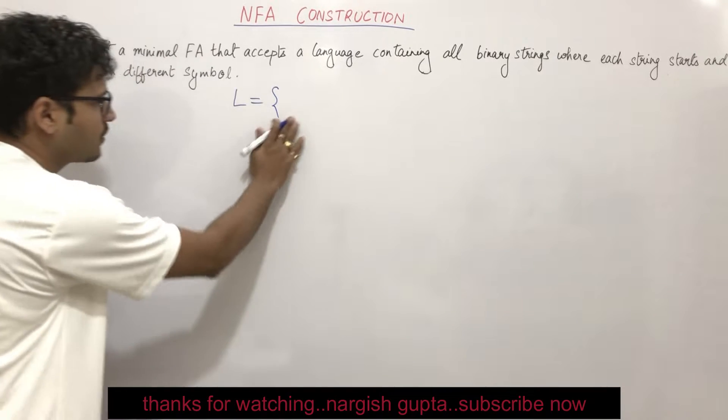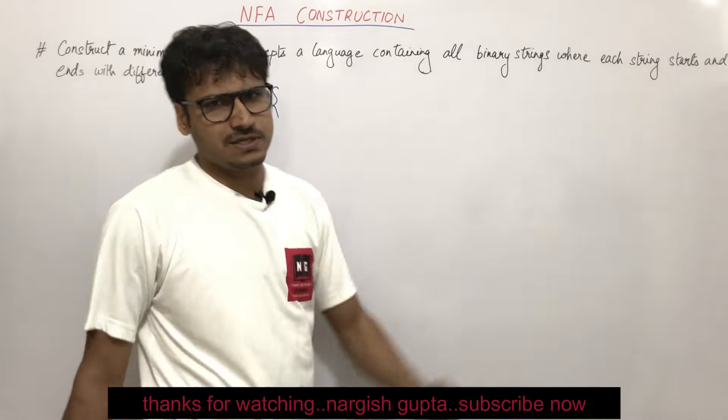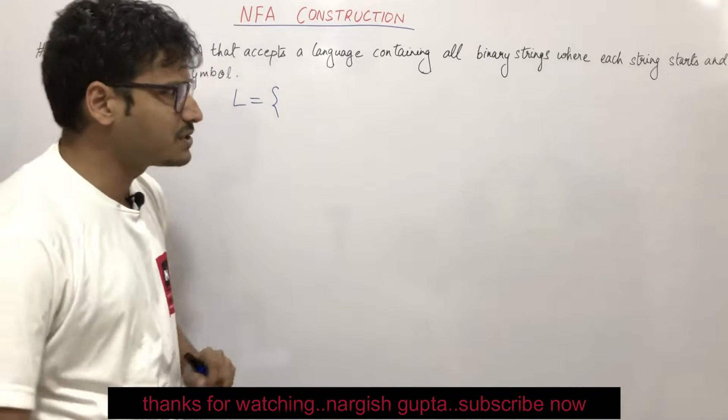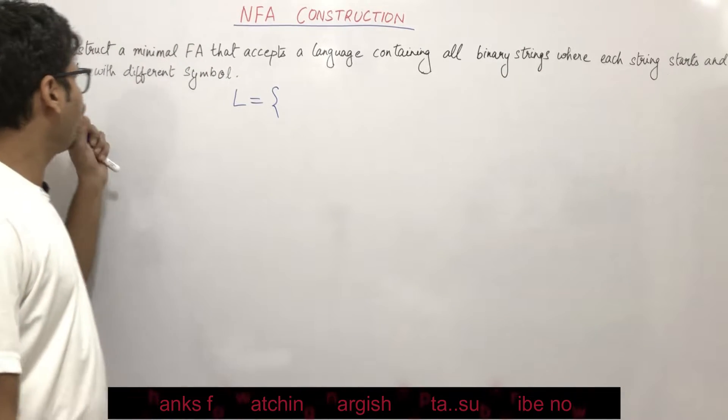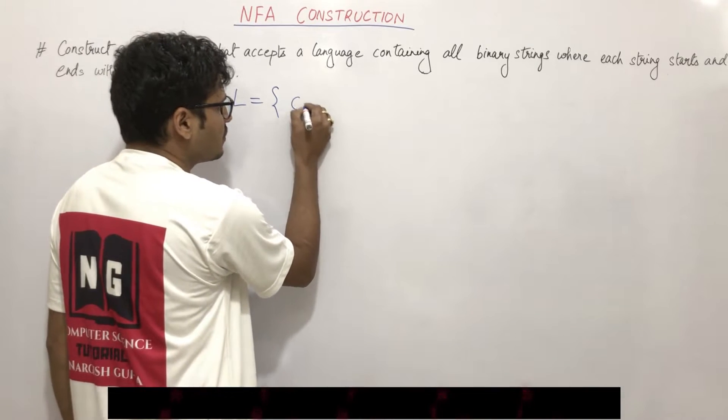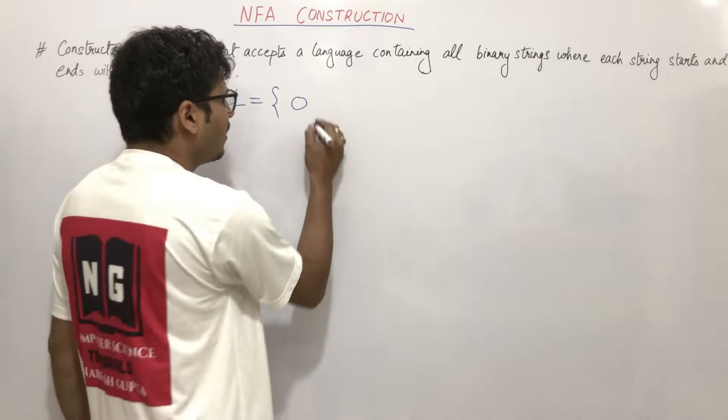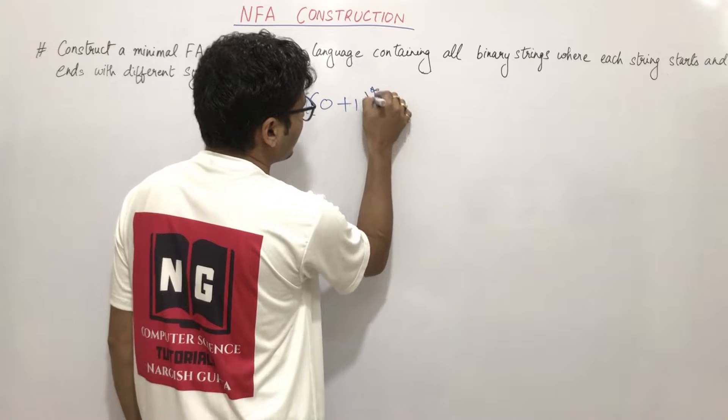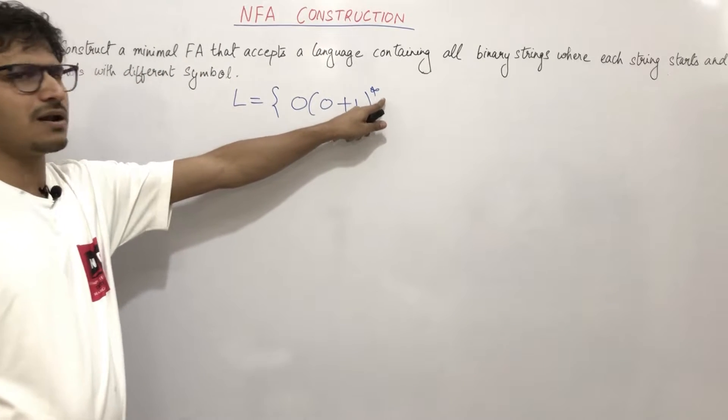This particular language is all binary strings. All binary strings means any combination of 0 and 1, and the condition is start and end with different symbols. It means if you start with 0, then end should be with 1, and in between 0 or 1 any combination can occur because it says all binary strings.